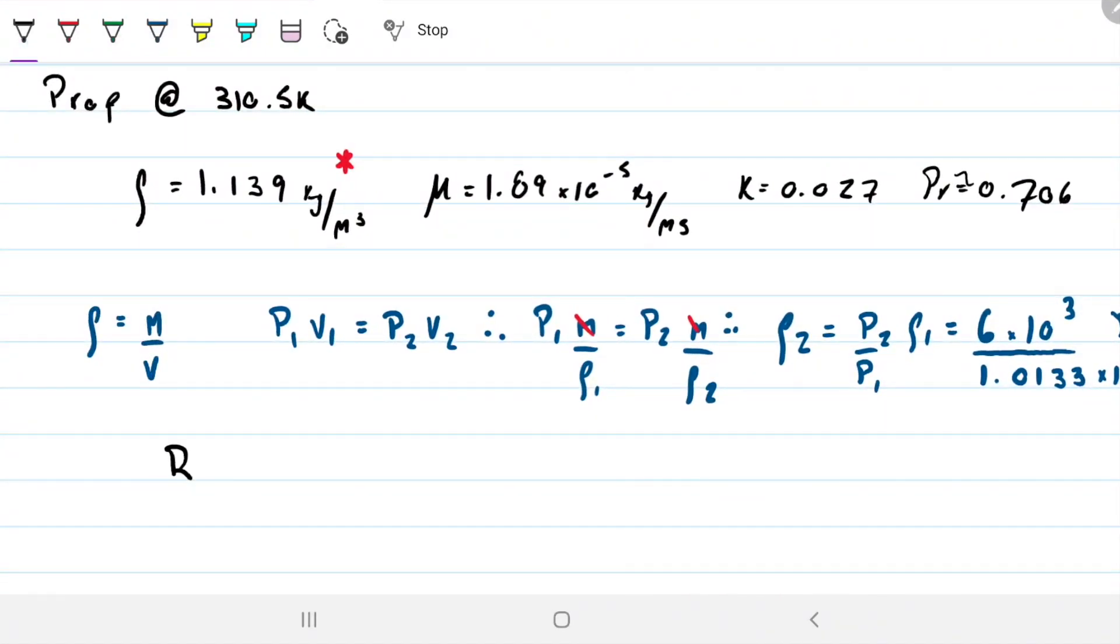Let's get Reynolds. Density, velocity, characteristic length, and dynamic viscosity. That will be 1.139 times 6×10³ divided by 1.0133×10⁵, that's just density. Velocity, this guy is coming in at 10 meters per second, the length of this plate is 0.5 meters, and the dynamic viscosity is 1.89×10⁻⁵. I've got Reynolds to be 17,813.